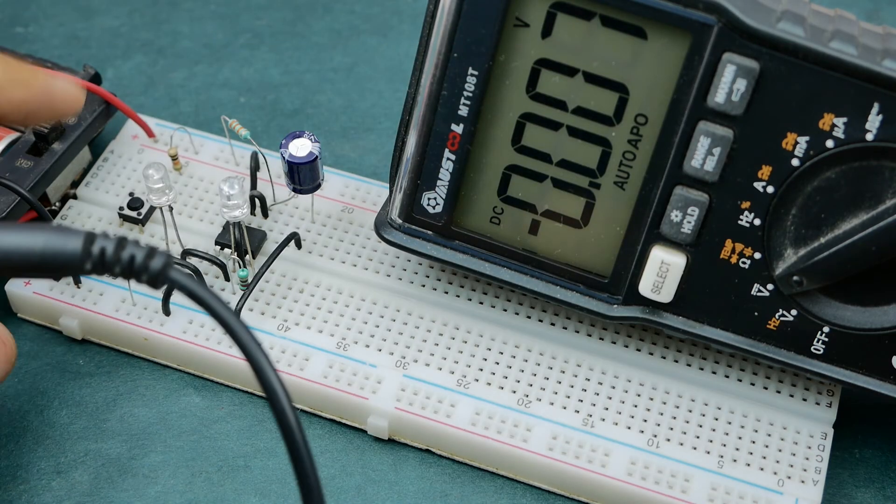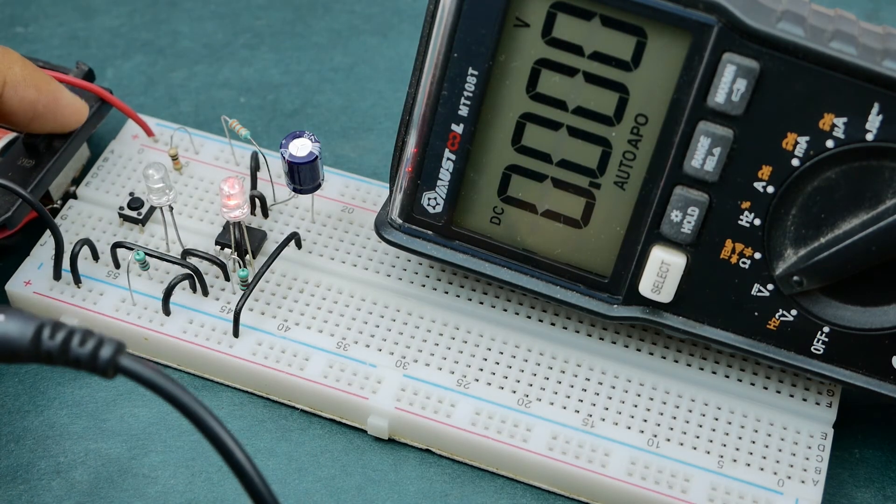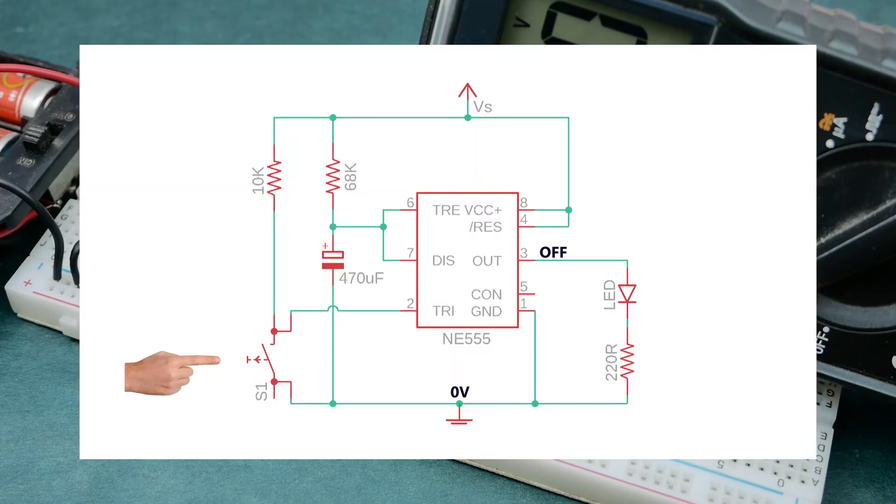Initially when this circuit is powered ON, the output will be in OFF state. Whenever the output is in OFF state, the discharge pin, pin 7 will be internally connected to 0V. So the capacitor completely discharges and won't be able to charge via the series resistor that connects it to positive rail.